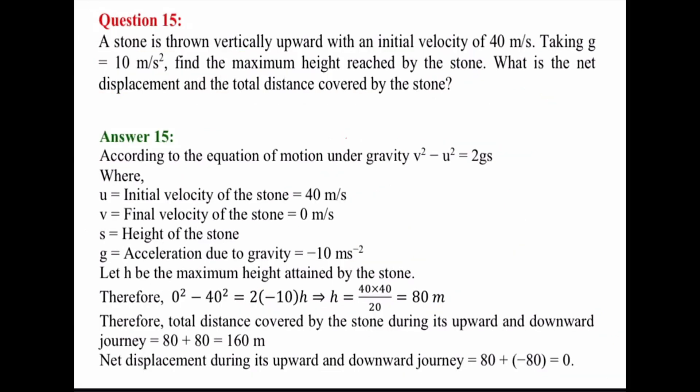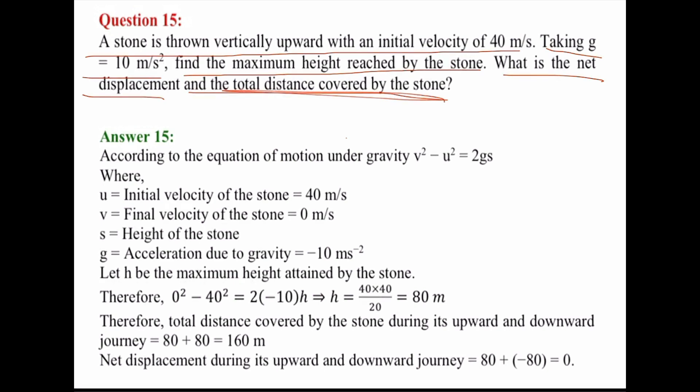Question number 15: A stone is thrown vertically upward with an initial velocity of 40 meters per second, taking G equals 10 meters per second squared. Find the maximum height reached by the stone, the net displacement, and the total distance covered. This is a similar type of question to what we solved before — the stone is thrown vertically upward with initial velocity 40 meters per second.